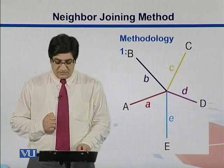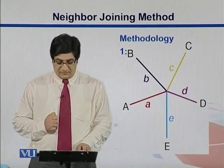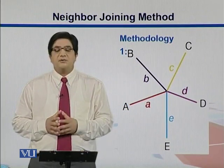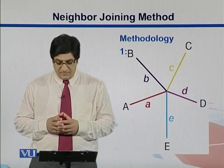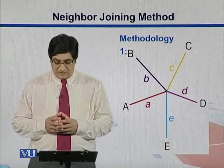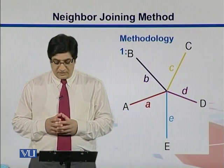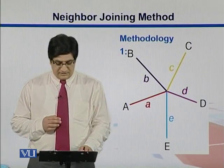For the methodology, we take those sequences. At first, we make an unrooted, star-like tree from them. We put A, B, C, D, and E, and the branch lengths are represented by their respective small letters.